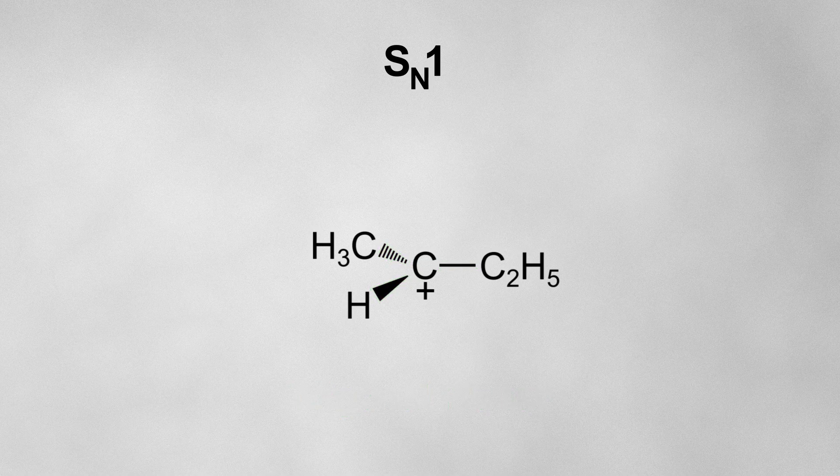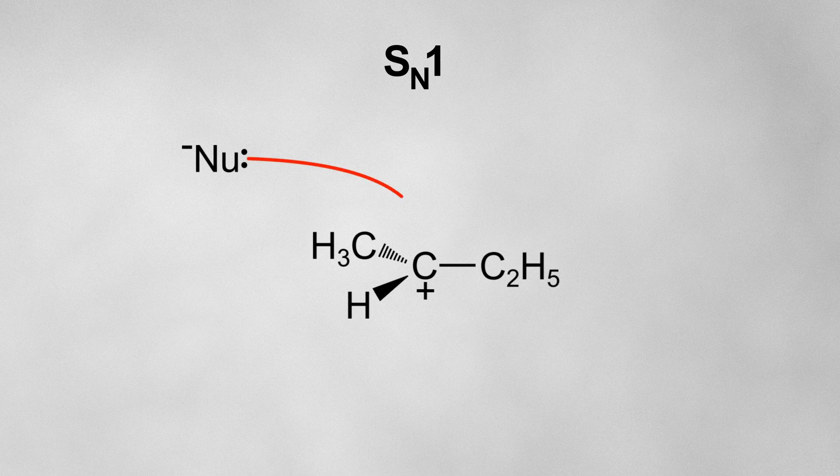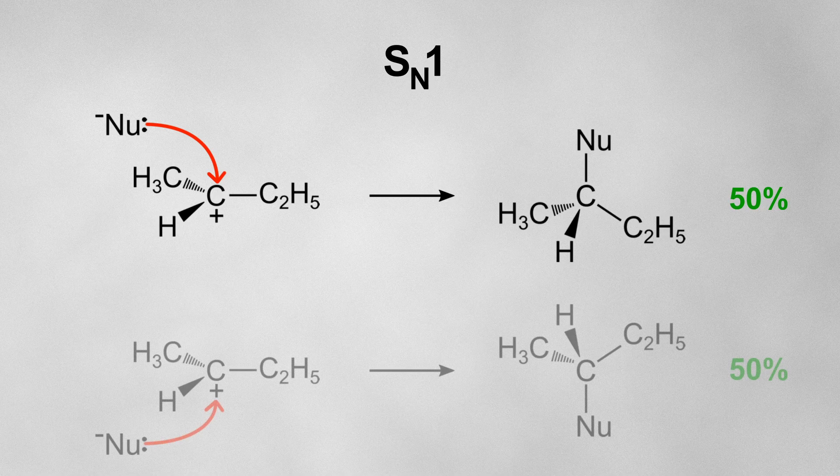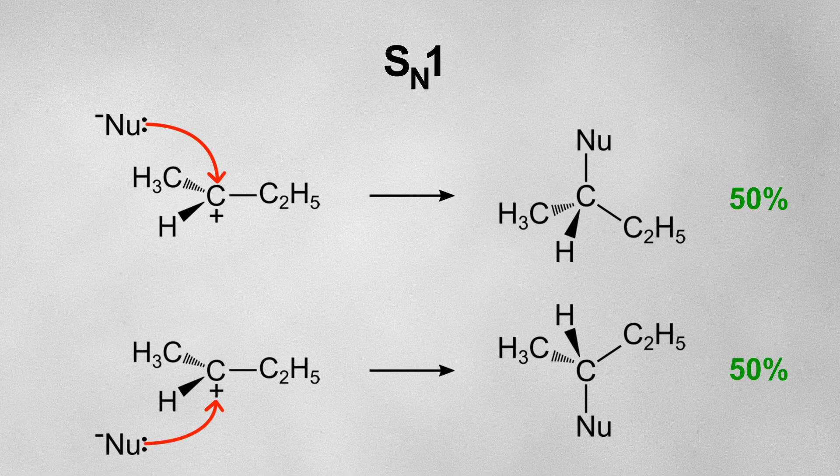This molecule is flat and is equally likely to be attacked by a nucleophile from above or from below. Therefore, 50% of the products will be one optical isomer, and 50% of the products will be the other.